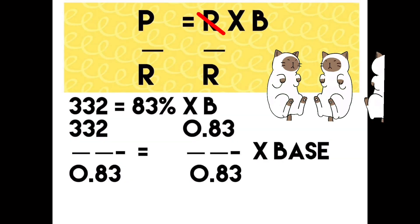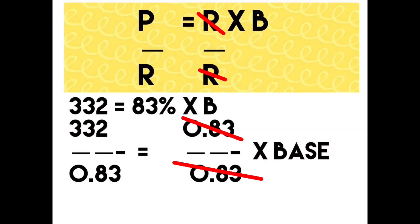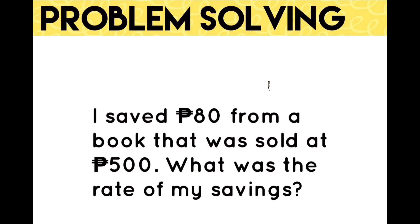So to find the base, percentage divided by rate. Don't forget to change the percent to its decimal form. So 400 is the score to get the highest mark. Next,